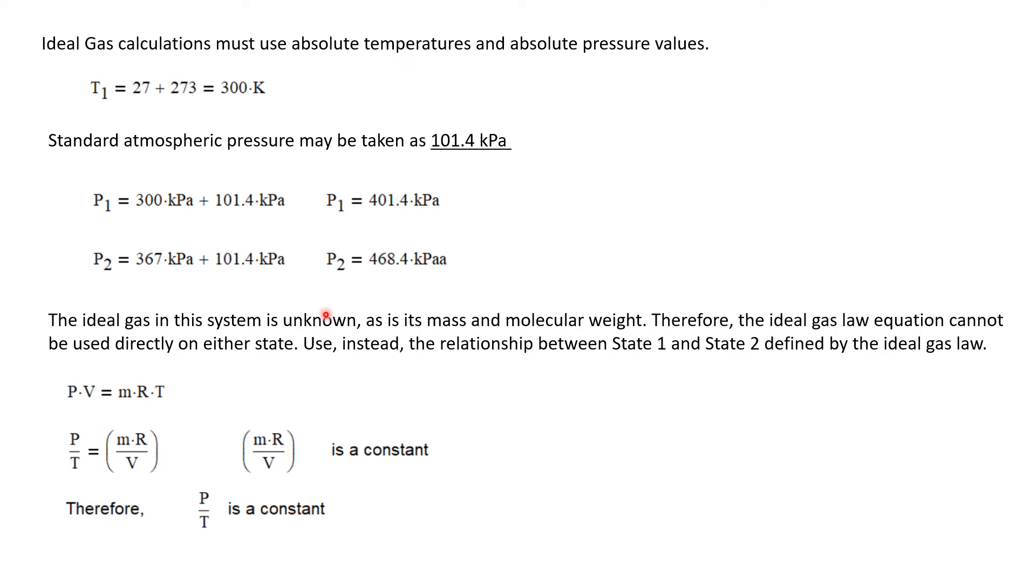Now, we don't know specifics about this gas. We're told it's an ideal gas, so we could use the ideal gas law PV equals MRT, but we don't know the mass, and we don't even know what the gas is. So we're not going to be able to solve the gas law equation at any given state directly. When we can't do that, we can use the ideal gas law at each state to develop a relationship between the two states.